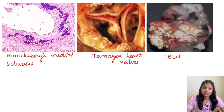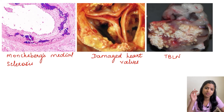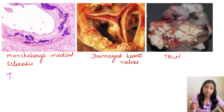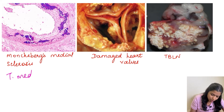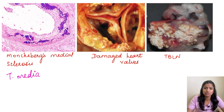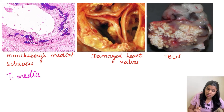Monckeberg's sclerosis is nothing but calcium deposited on the tunica media of vessels. It is also called Monckeberg's medial sclerosis. In the tunica media of vessels of elderly women it happens as an age-related change — calcification in the media. It is not of any clinical significance; it is just an age-related change and is one example of dystrophic calcification.